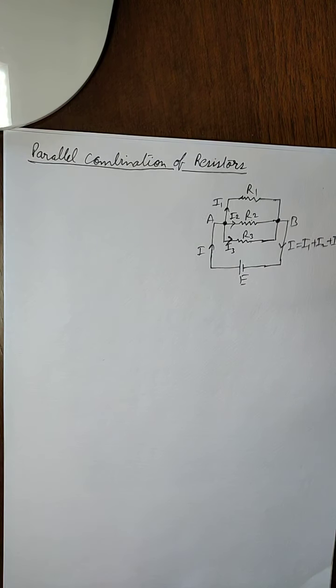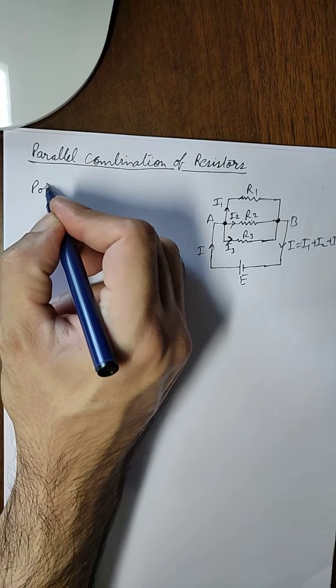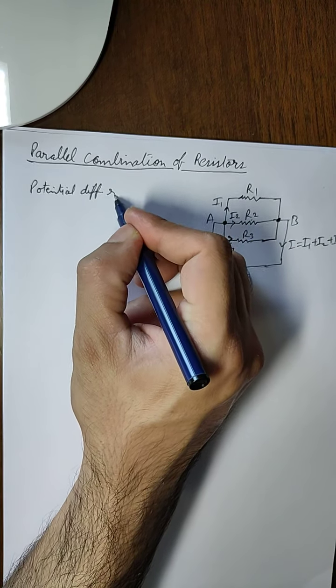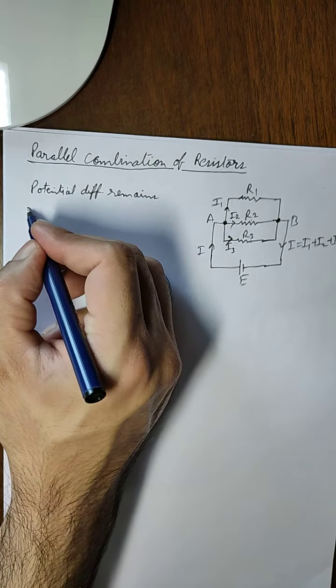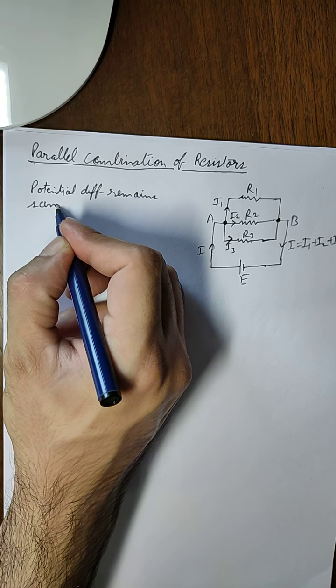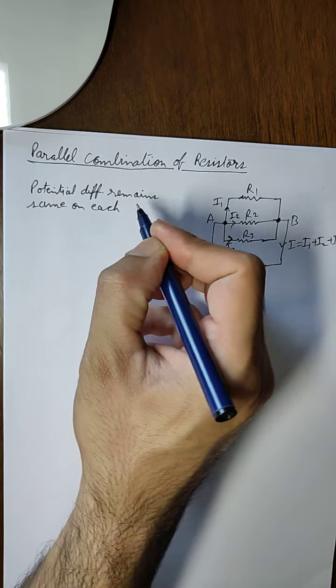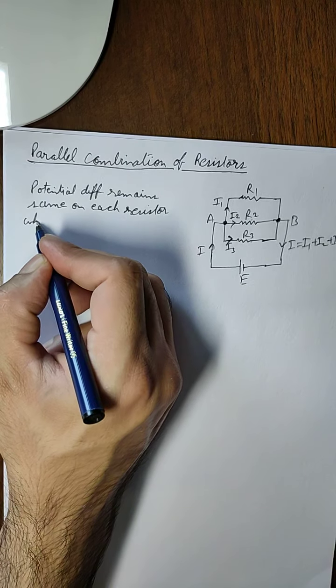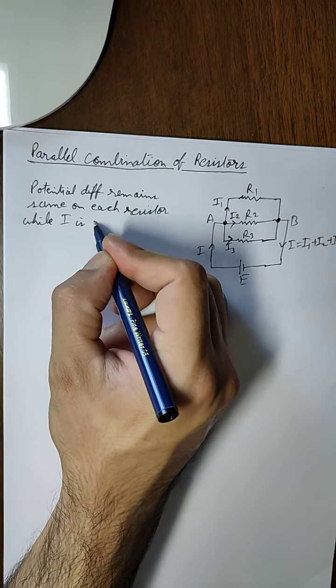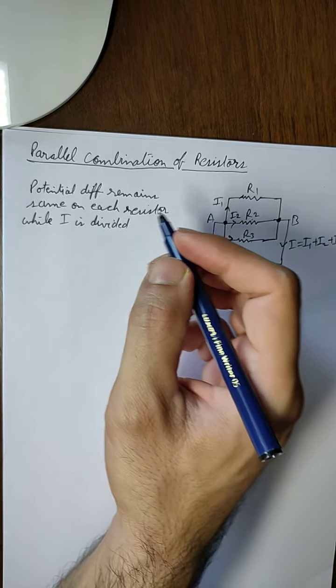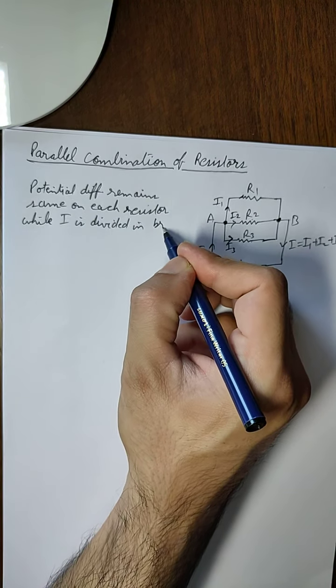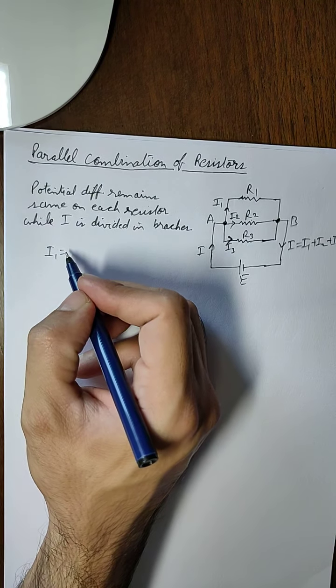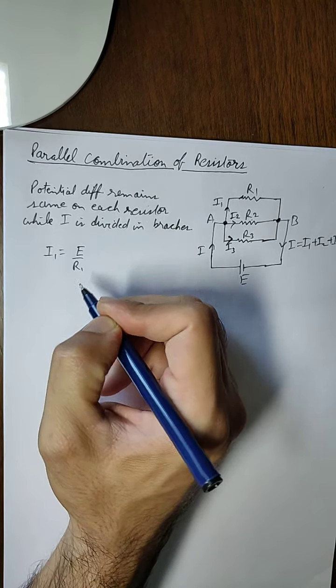By using this, we can write the potential difference. The potential difference remains the same on each resistor, while I is divided in branches.